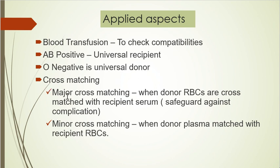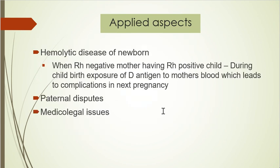Cross-matching is of two types - major and minor. Major cross-matching is when donor RBCs are matched with recipient serum, which contains the main antibody store. This is called major because the major reaction happens here when donor antigens meet all recipient antibodies. Minor cross-matching is when donor plasma is matched with recipient RBCs.